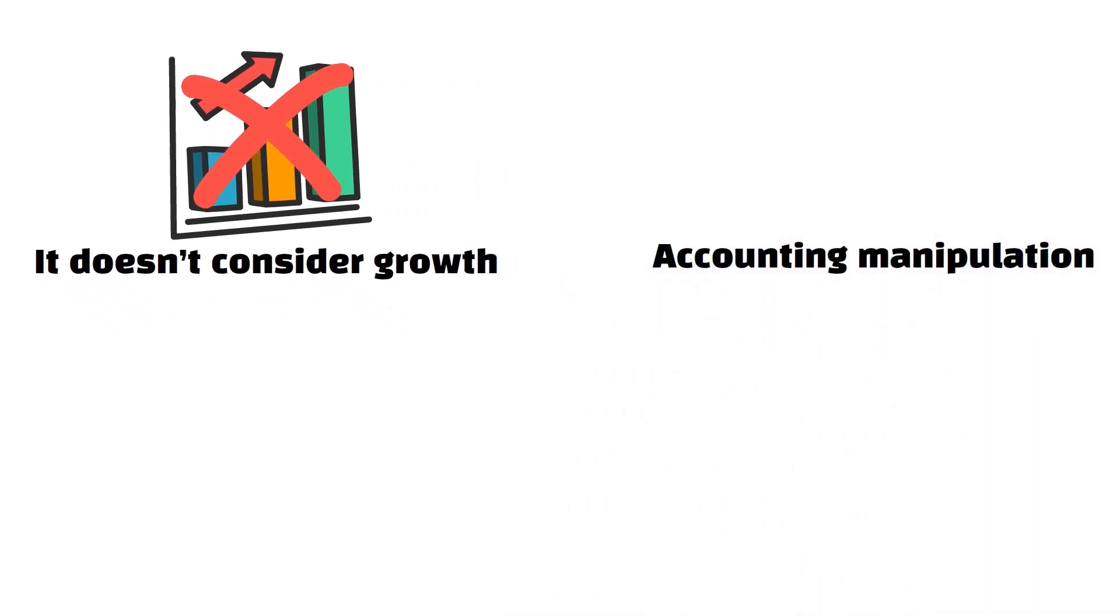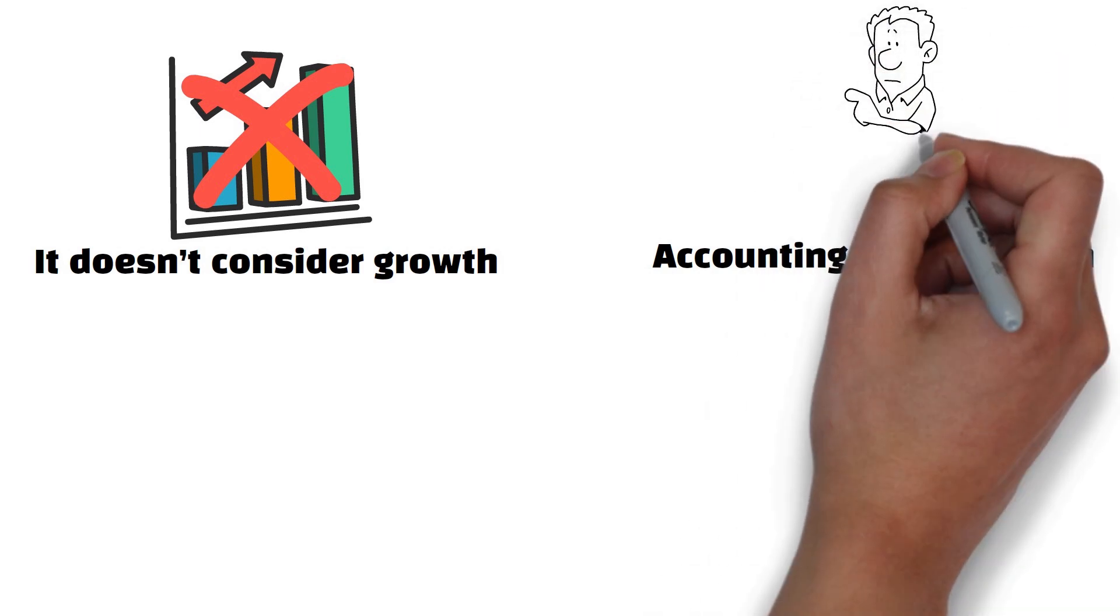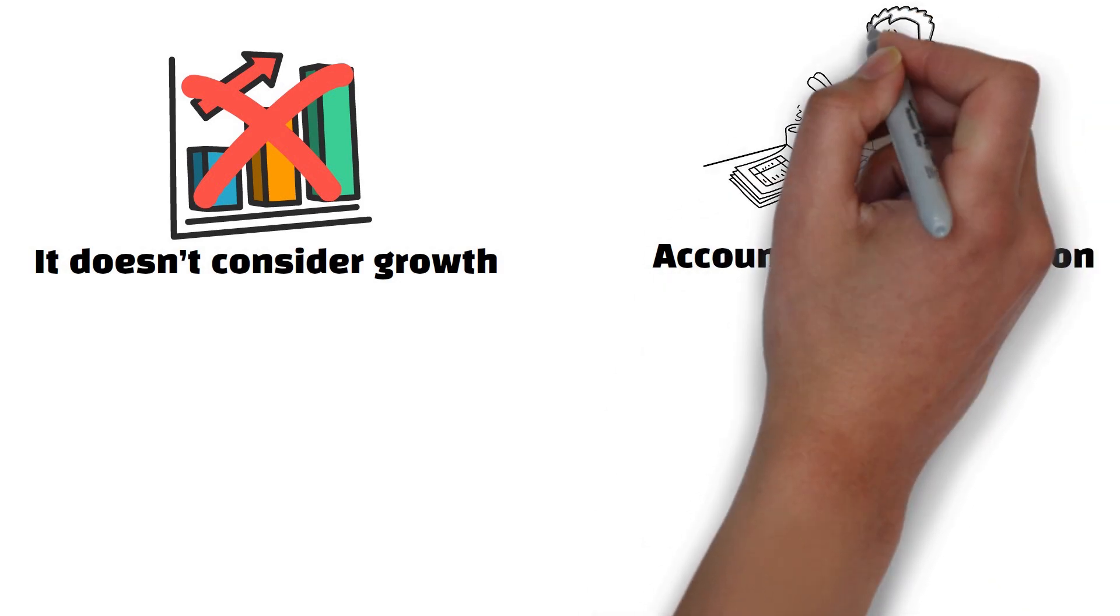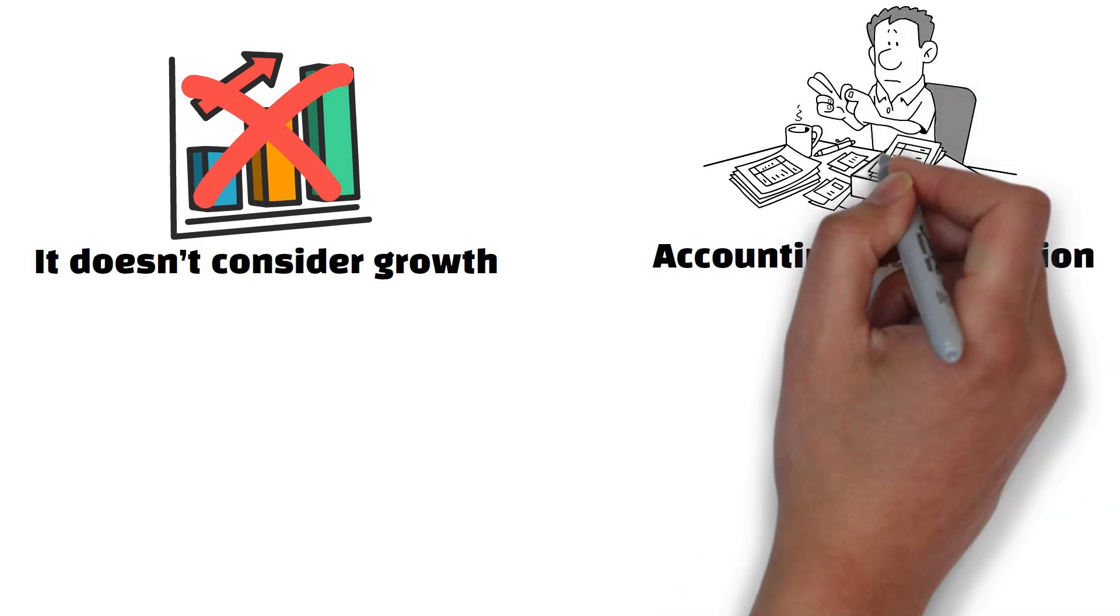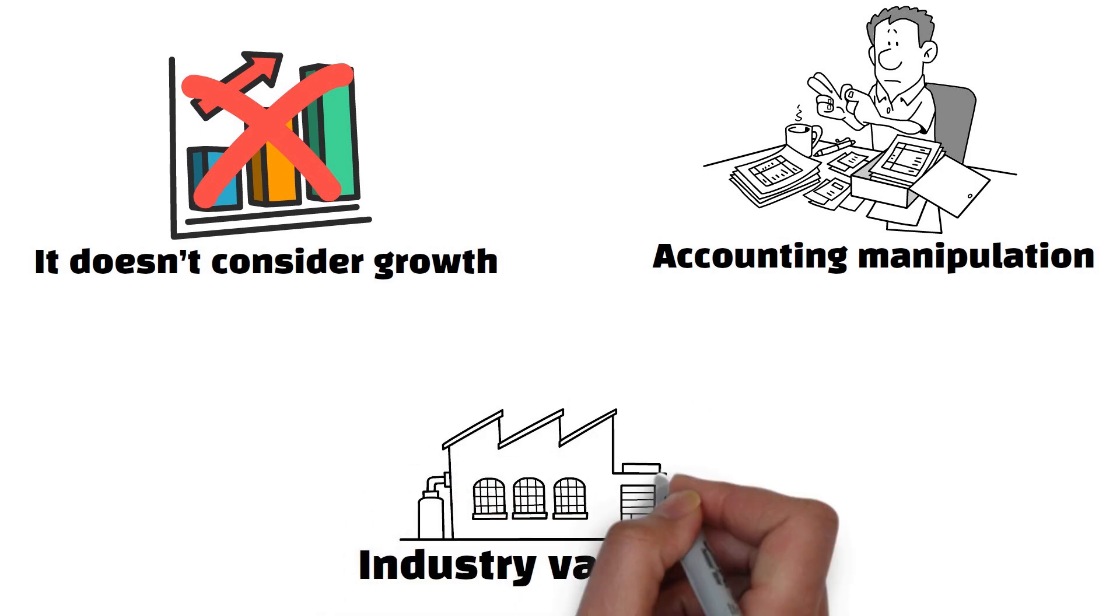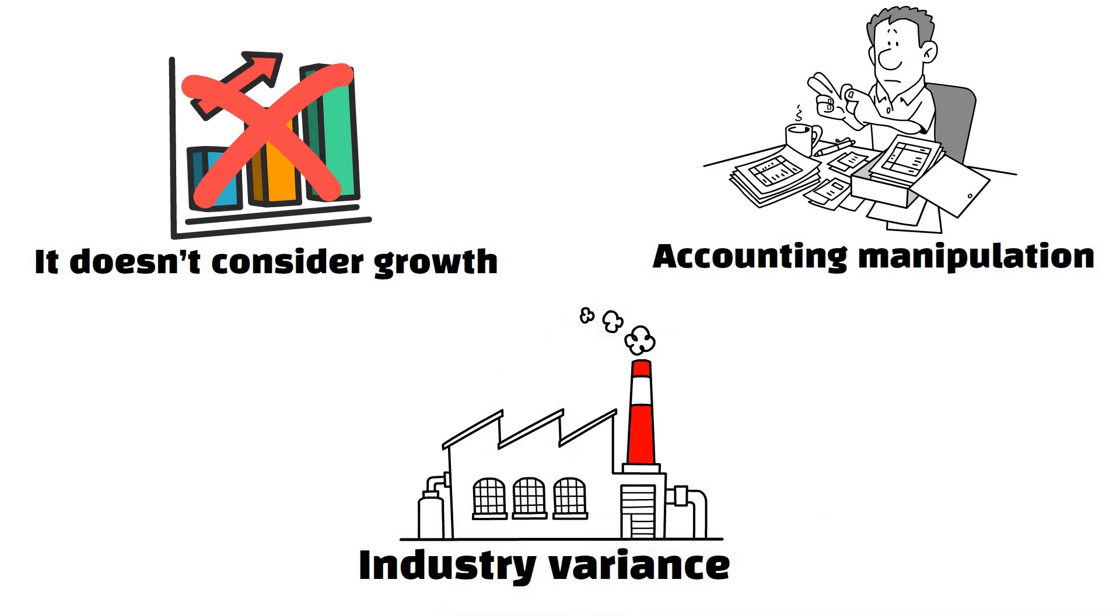Accounting manipulation. Since the P-E ratio depends on earnings, companies can manipulate it through accounting practices. Companies can delay expenses or accelerate revenue recognition to make the earnings appear better. Industry variants. Some industries like the tech industry have higher P-E ratios than other, safer industry companies, so using it across different industries can lead to unfair conclusions.